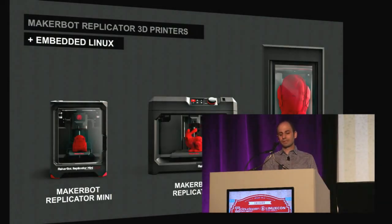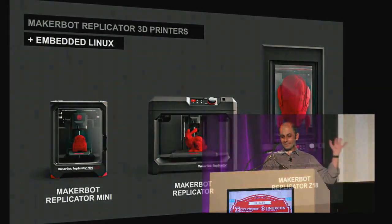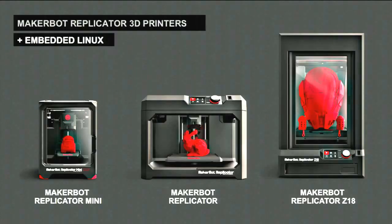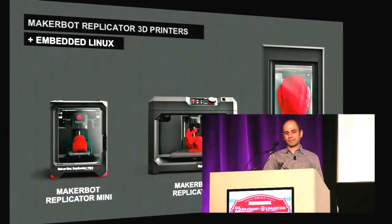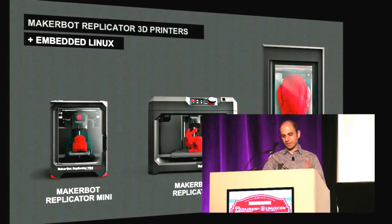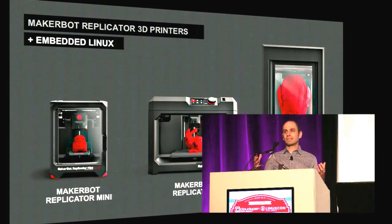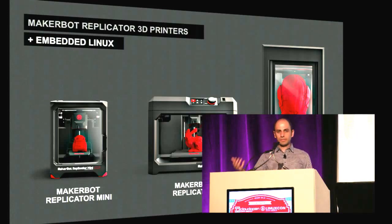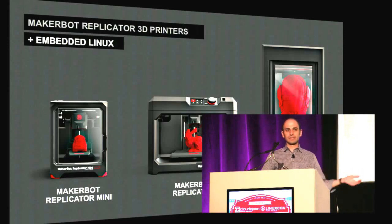First and foremost, MakerBot loves Linux. This is the new fifth-generation Replicator platform, all of which are built on embedded Linux — the 3.8 mainline to be exact. There are a lot of pretty obvious reasons for this. It's a profound improvement in development time; we were able to get these things to market so much faster. Linux has all the support for peripherals, networking. It's a huge change in scalability, maintainability, and field upgradability. Embedded Linux is, quite frankly, how products like this should be built.